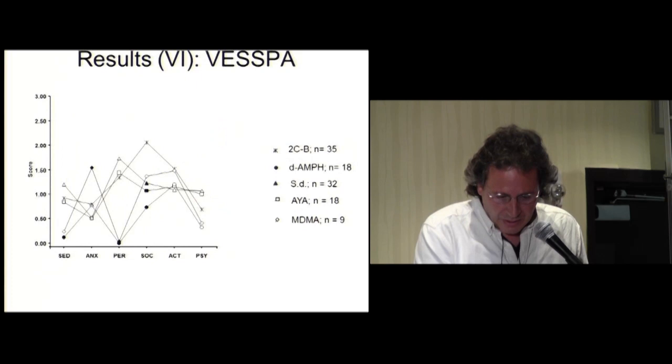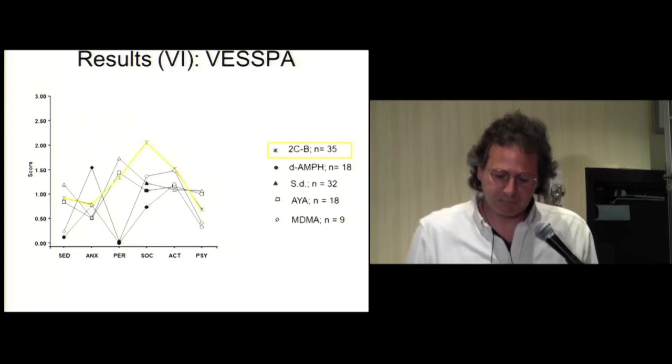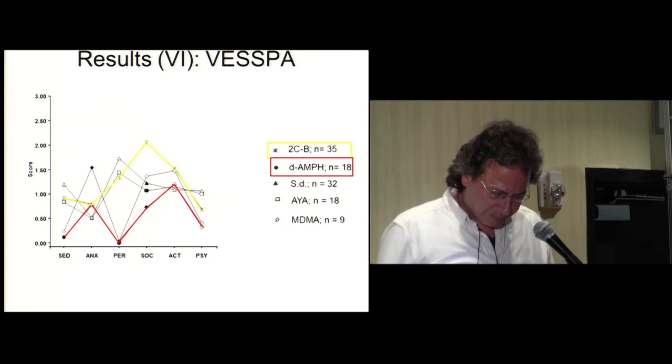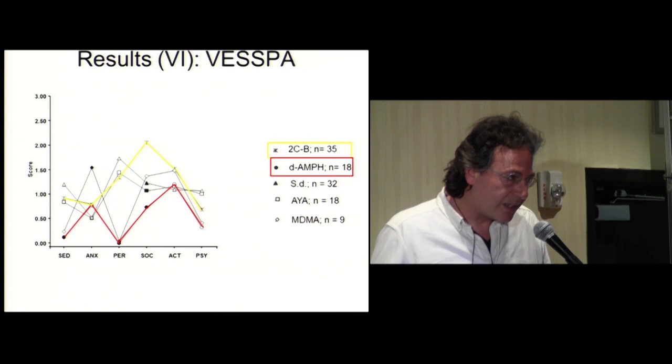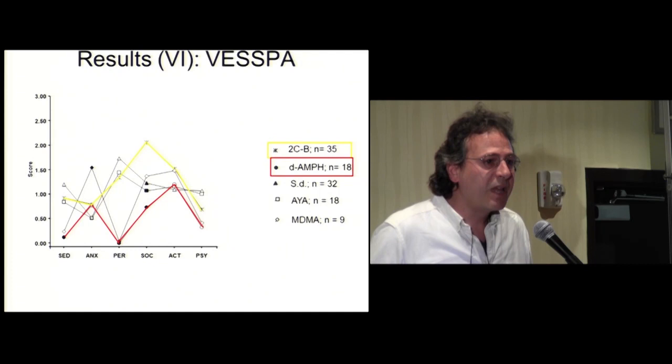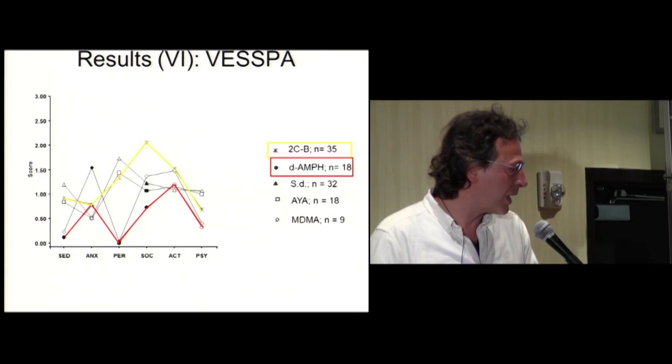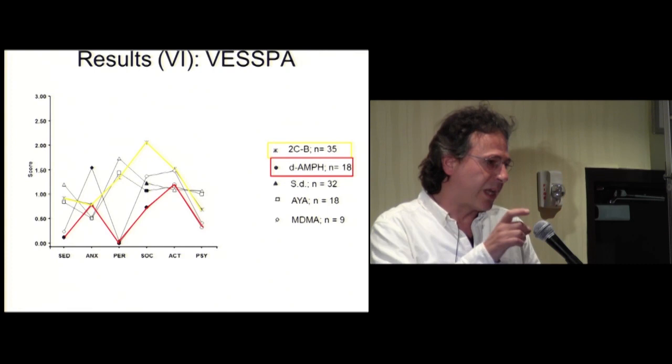Regarding the results in VESPA, again this is the profile for 2CB. Compared with amphetamine, there is also a significant difference in Sedation, by example, or in Perception, and also in Sociability. In our samples, 2CB showed to be a very sociable drug. But maybe some differences are because the results from 2CB came from a naturalistic study, and the results from MDMA, ayahuasca, and amphetamine came from a laboratory study. Again, with Salvia divinorum, there are not almost differences in any of the subscales. But again, 2CB shows more Sociability.